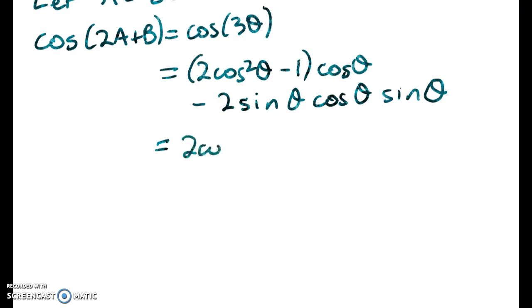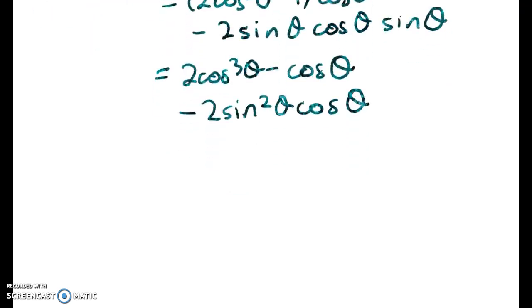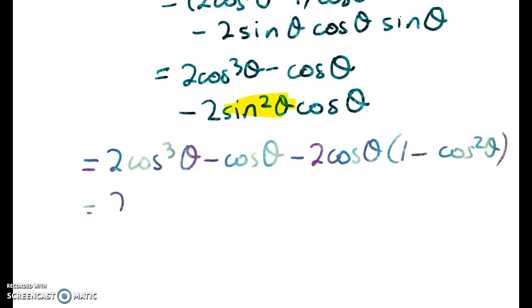We're going to expand that out now and collect up terms. So what have we got? Well, 2 cos squared theta cos theta minus cos theta minus 2 sin squared theta cos theta. But remember, I don't want to have any sines in my answer. I want all cosines. So I'm going to take the sin squared and replace it with 1 minus cos squared. So we'll take the 2 cos theta out the front and replace the sin squared theta.